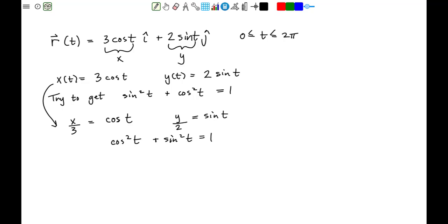This means that x over 3 quantity squared plus y over 2 quantity squared is equal to 1. This clearly is the equation of an ellipse, where the major axis has a radius of 3 and the minor axis has a radius of 2.